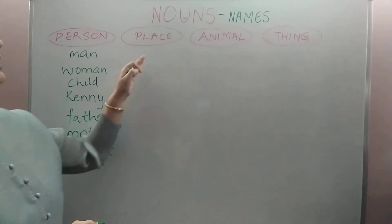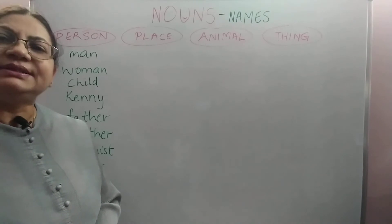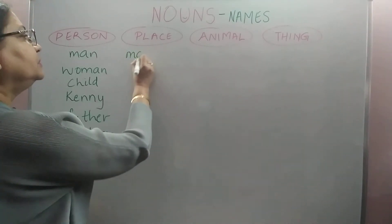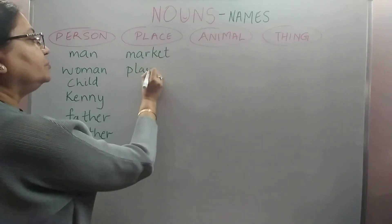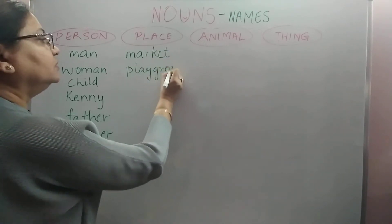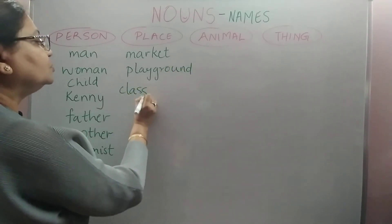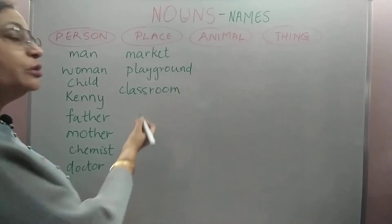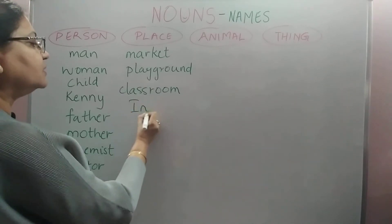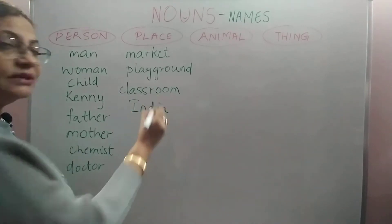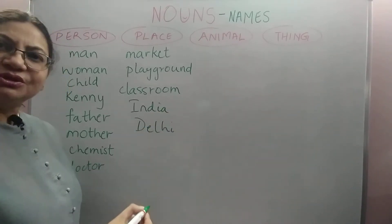Next we come to the names of places. Names of places would be, for example, the market — that is a noun. A playground where children play — that is a noun. A classroom where children study — that is also a noun and also a place. Or it could be the name of a country, for example India. India is a noun. It could be the name of a city, for example Delhi. Delhi is also a noun.